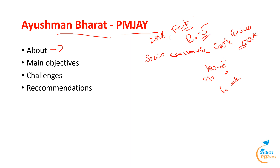Under the Societies Registration Act 1860, the National Health Authority was established as an independent body to carry out this scheme in cooperation with state governments.